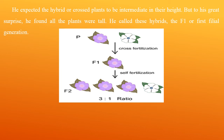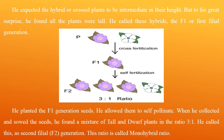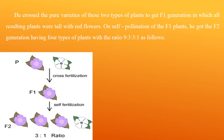He called these hybrids the F1, or first filial, generation. He planted the F1 generation seeds and allowed them to self-pollinate. When he collected and sowed the seeds, he found a mixture of tall and dwarf plants in the ratio 3:1. He called this the second filial generation, and this ratio is called the monohybrid ratio.